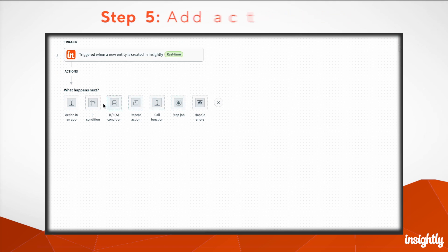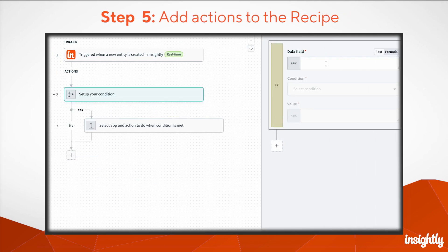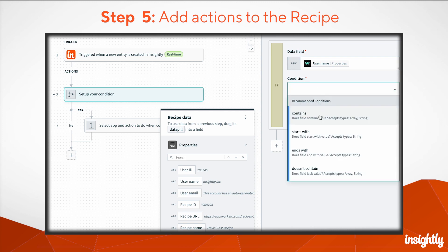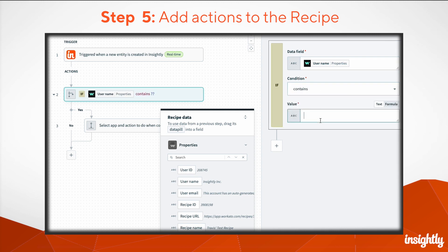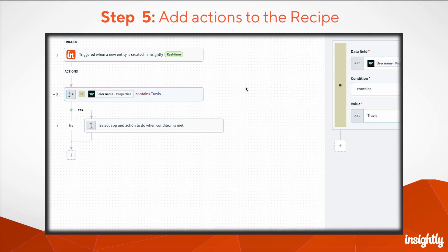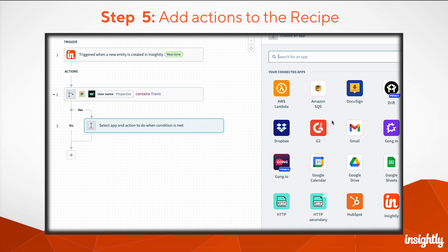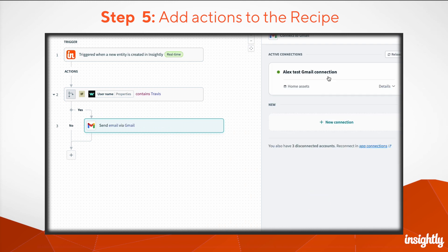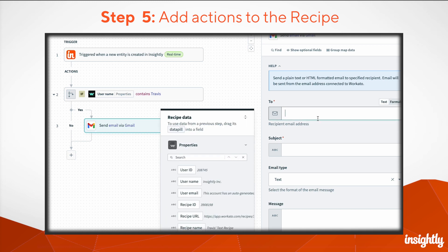Once you've selected your trigger, you're ready to build your automation by adding actions to the recipe — like creating a lead in Insightly CRM when someone sends an email to your Gmail account, or changing the value of an existing contact in Insightly CRM when you receive new data. By adding if conditions and call functions, you can create branching workflows so that your recipe does exactly what you need it to do.